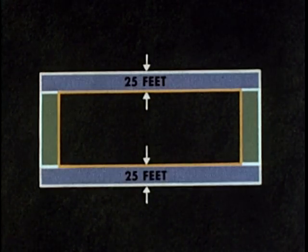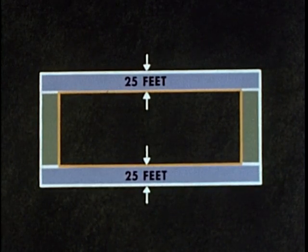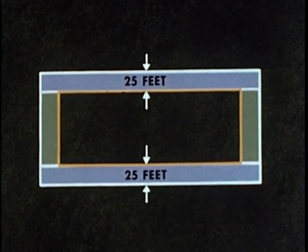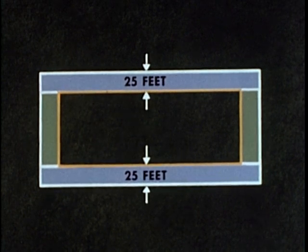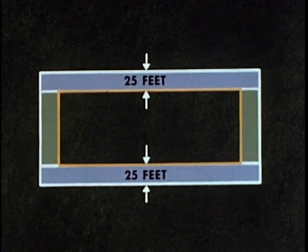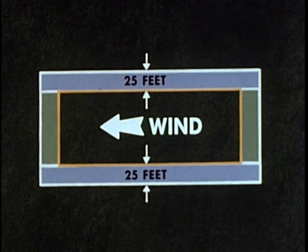To allow for wing clearance, all runways for light or medium aircraft should have 25-foot strips along both sides of the runway cleared to within 3 feet of the ground. Since aircraft must land into the wind, the runway should be laid out to face the prevailing winds.